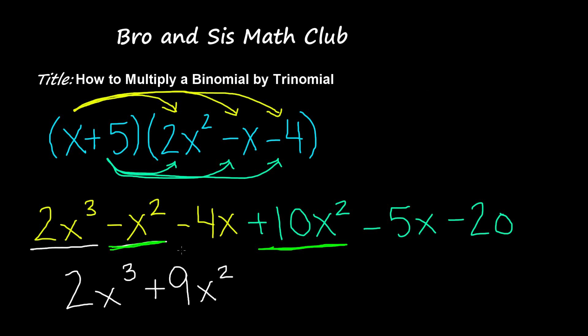And then we have negative 4x. We have to find a like term that has the same variable which is x. So we have negative 5x. Negative 5x and negative 4x give us negative 9x.